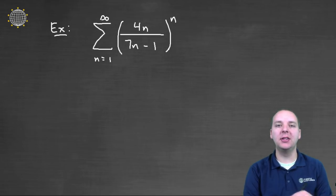Let's see if we can determine the convergence or the divergence of the infinite series 4n divided by 7n minus 1 all raised to the nth power where n goes from 1 to infinity.